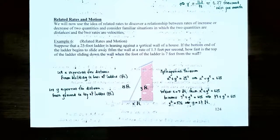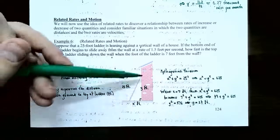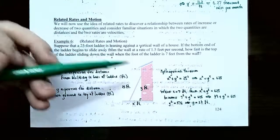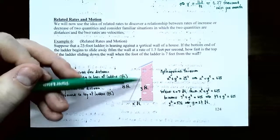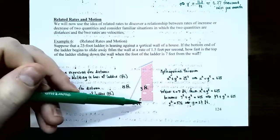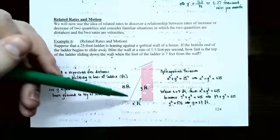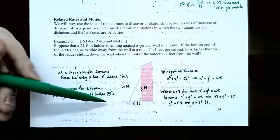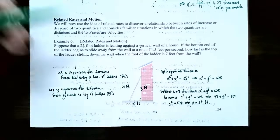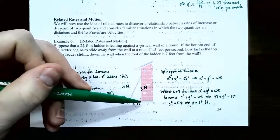Let's start with a picture that illustrates what's happening in the problem. You have this wall or building, and you have a ladder leaning up against the building. The ladder is always 25 feet long — it does not change. You also have the height that the ladder reaches up the building, and the distance from the base of the ladder to the base of the building. As the ladder slides down the wall, it slides out from the base of the wall as well.